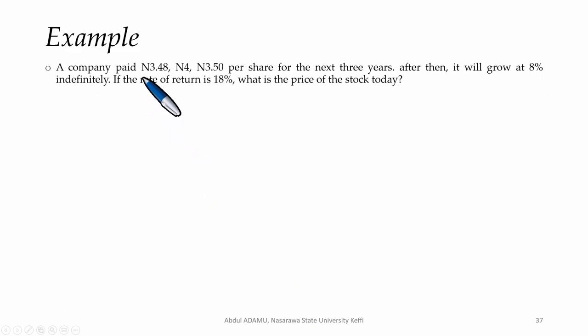A company paid 3 Naira 48 kobo, 4 Naira, 3 Naira 50 kobo per share for the next 3 years. After then, it will grow at 8% indefinitely. So at this point, we use the Gordon growth model. If the rate of return is 18%, what is the price of the stock today? So let's use the second method to solve this.